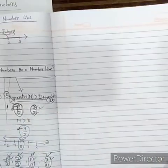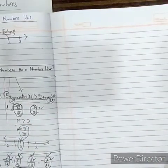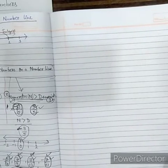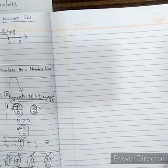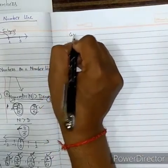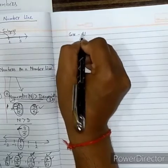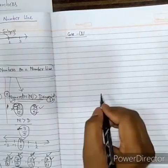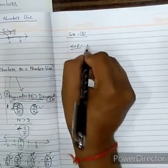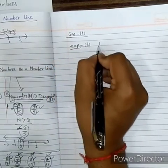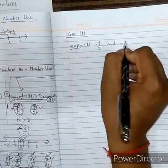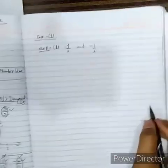Now we have to understand how the first case we have to represent on a number line. For the first condition, we take the first example: 1 by 2 and minus 1 by 2.